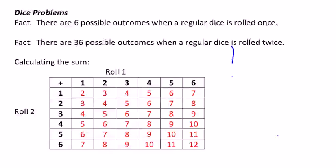In this video we're looking at dice problems. When you look at a dice problem, the first thing you always remember is that there are six possible outcomes when you roll a regular dice.